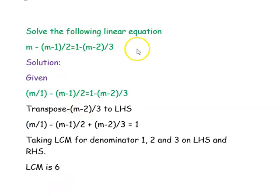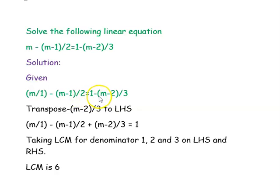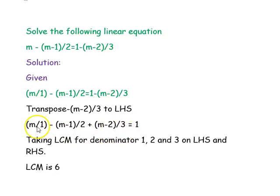The next question is: solve the following linear equation: m minus (m minus 1)/2 equals 1 minus (m minus 2)/3. We rearrange it as m/1 minus (m minus 1)/2 equals 1 minus (m minus 2)/3. In the first step we transpose minus (m minus 2)/3 to the left-hand side, where it becomes plus (m minus 2)/3. So the equation becomes m/1 minus (m minus 1)/2 plus (m minus 2)/3 equals 1.